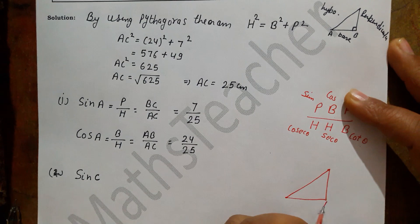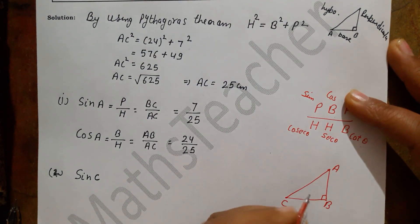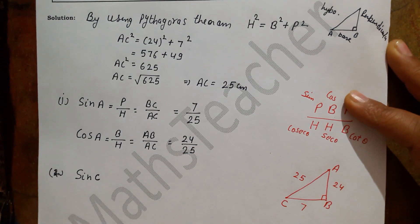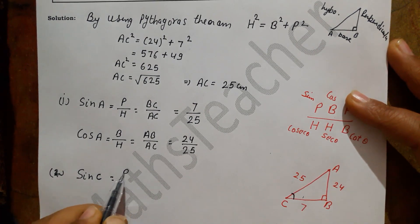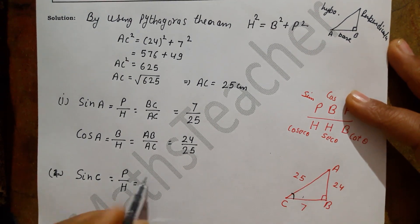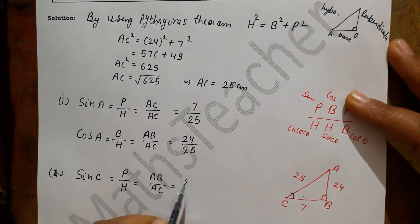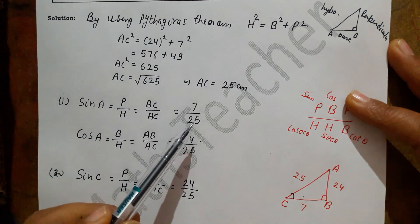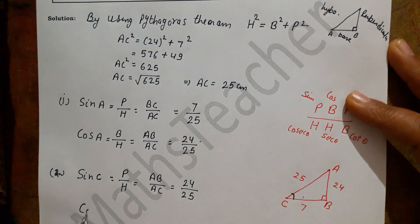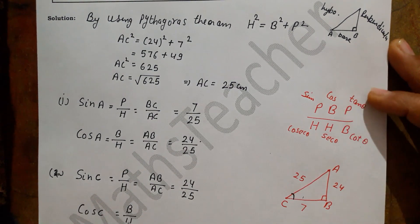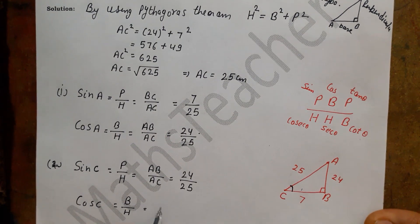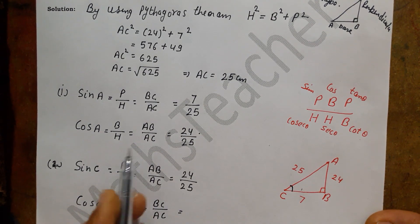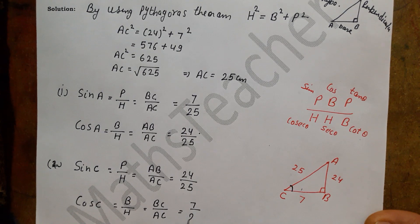So I am drawing another triangle with angle B still 90 degrees, placing C at the base and A at the top. The sides remain the same: AB is 24, BC is 7, and AC is 25. Now sin C equals perpendicular upon hypotenuse, which is AB upon AC, giving 24 upon 25. And cos C equals base upon hypotenuse, which is BC upon AC, giving 7 upon 25.